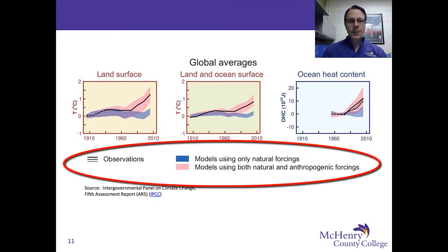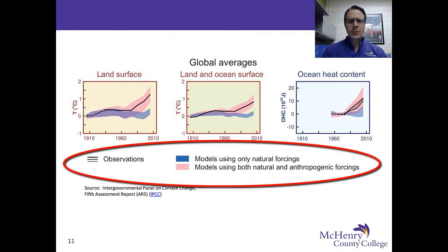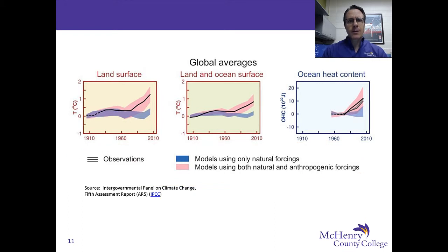Beneath the three graphs we have a key. The black lines are the observations that we have physically collected — this is real data. The blue areas are computer models that look only at natural forcings, that is, natural heating events that could explain temperatures. The pink parts illustrate models that use both natural as well as anthropogenic heating components. On the first graphic on the left, we see land surface.